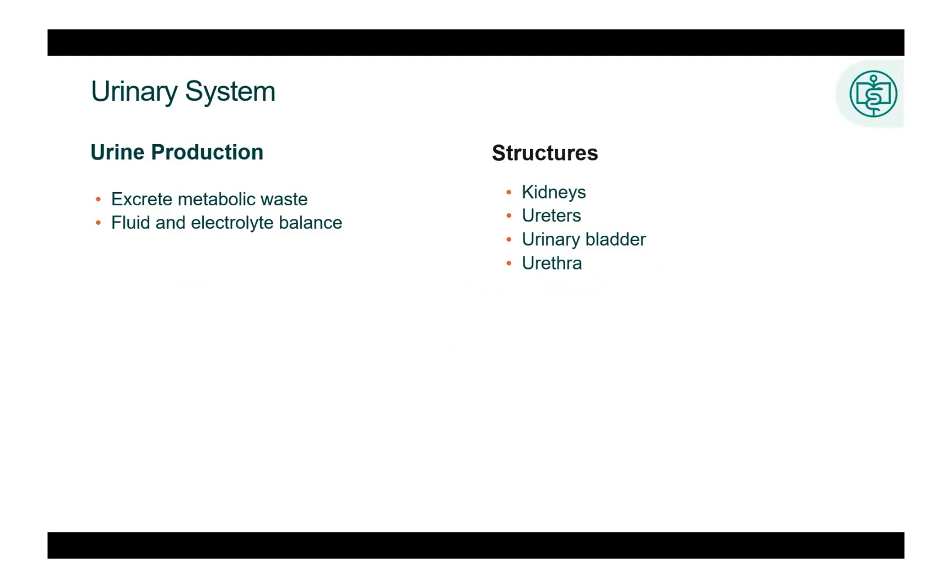The urinary system is primarily responsible for the production of urine for the excretion of metabolic waste, along with fluid and electrolyte balance. Structures of the urinary system include the kidneys, ureters, urinary bladder, and the urethra. A urinary calculi, or stone, can exist anywhere within the urinary system. The diagnostic and procedural coding are both dependent upon where in the urinary system the stone exists.